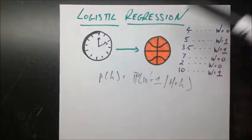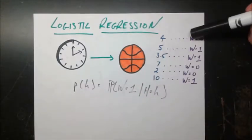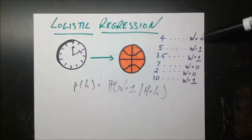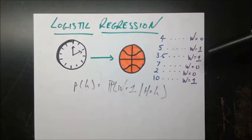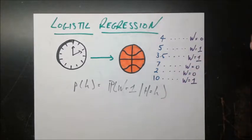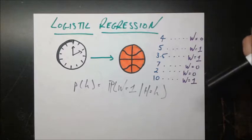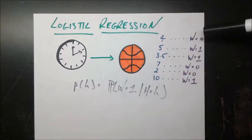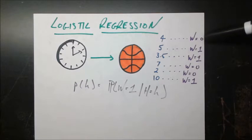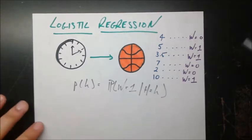But the thing we're trying to predict is not continuous — it's either 0 or 1. W equals 0 means they lost the game; W equals 1 means they won the game. It makes no sense to say W equals 0.5, because you can only either win or lose a game. We're going to ignore ties for now.